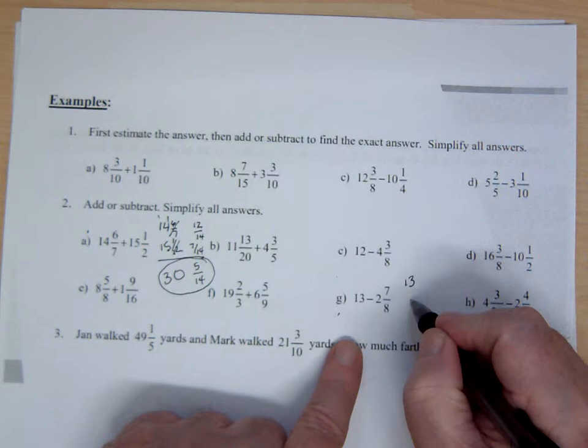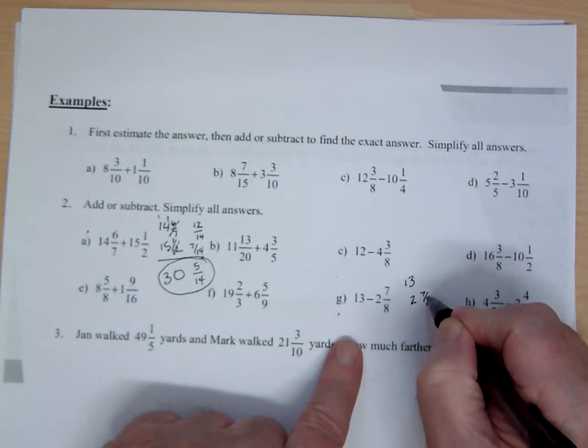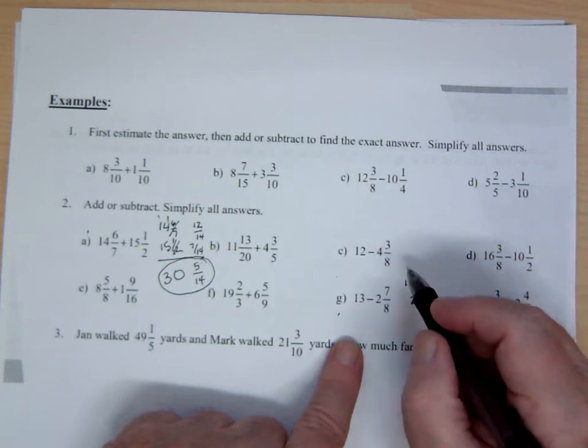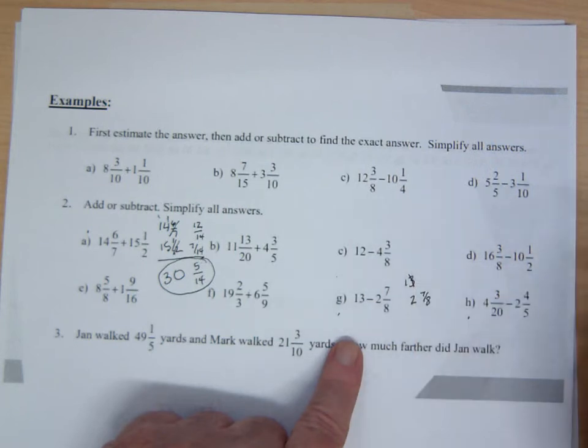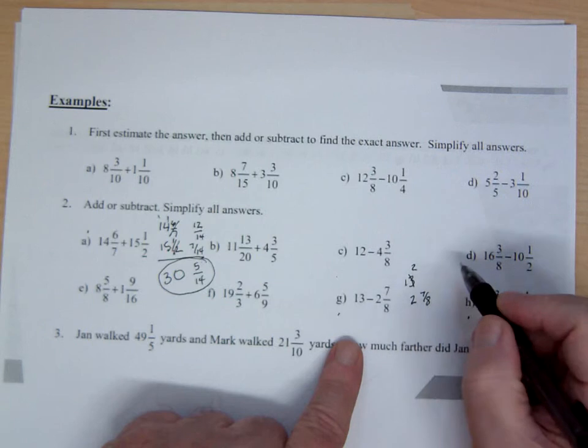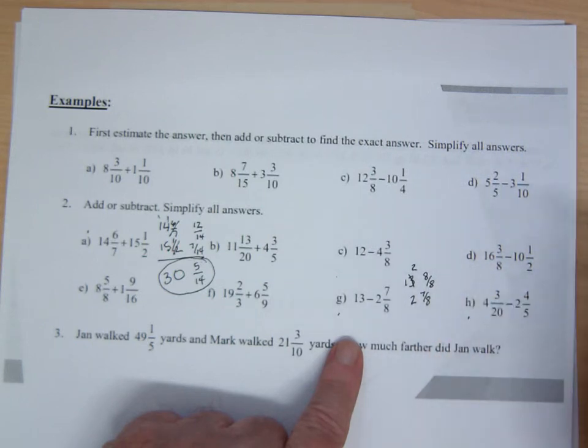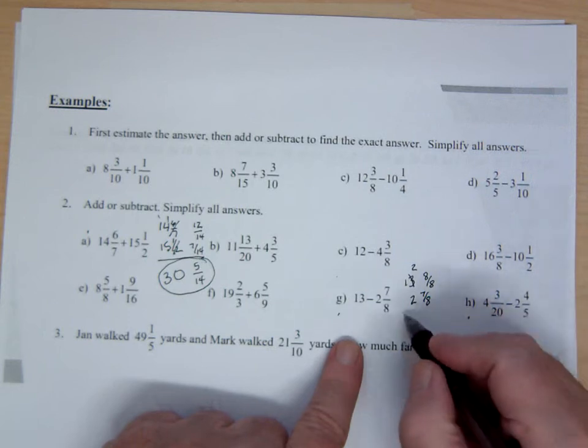Let's do a couple of subtraction problems. Let's do this one. So I have 13 and I'm taking away 2 and 7 over 8. Now I do not have anything in this column.